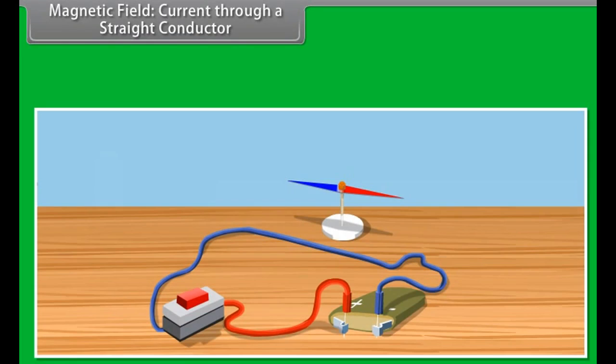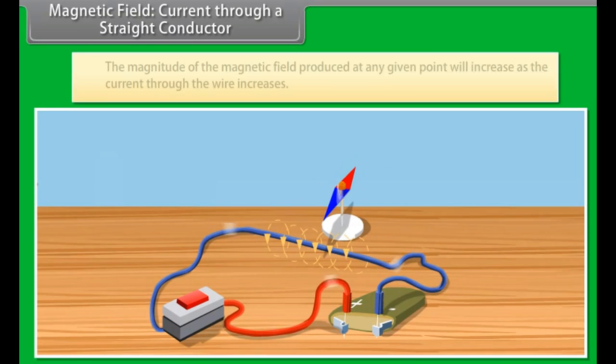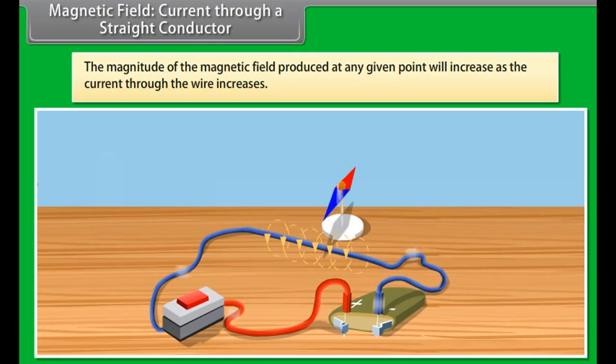Magnetic field current-carrying conductor. As you have seen earlier, let us see what happens when we change the current that is passing through the wire. The effect on the compass also varies. So, if you increase the current, the deflection of the needle of compass will increase. From this we know that the magnitude of the magnetic field produced at any given point will increase as the current through the wire increases.